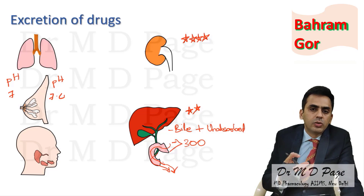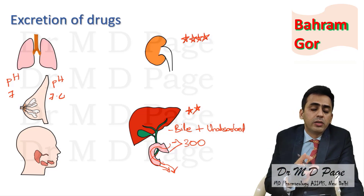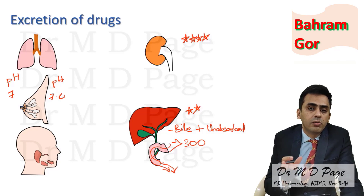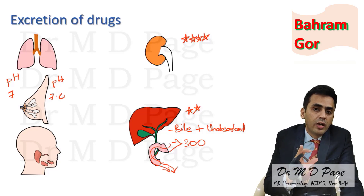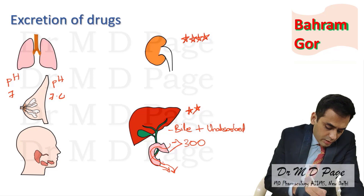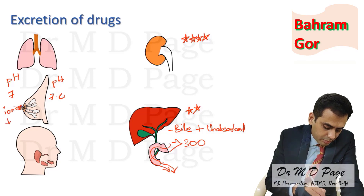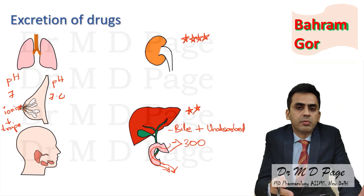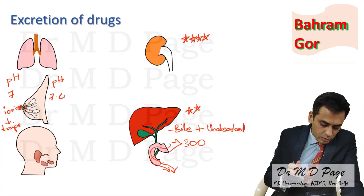A basic drug entering an acidic environment — which is what the milk represents — will be in an ionized state. If the drug is in an ionized state, it is water soluble and gets trapped. So what you have to know about drug excretion via breast milk is that basic drugs get trapped into the milk.